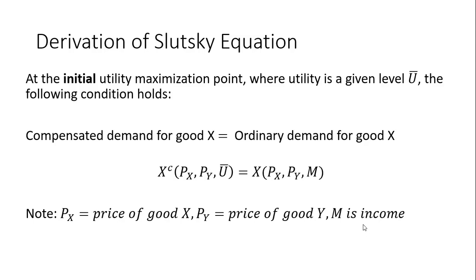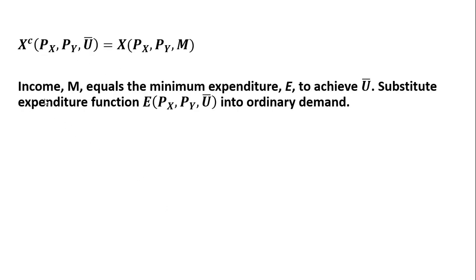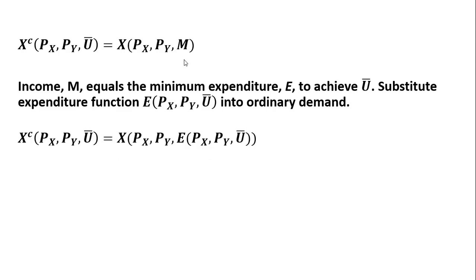Here m is income, price of good x, and price of good y. Rewriting that condition and recognizing that income m equals the minimum expenditure e to achieve a given level of utility U-bar, I'm going to substitute the expenditure function — which is a function of the prices of good x and good y and a given level of utility — into the ordinary demand function where I see m, plugging in the expenditure function. Making that substitution for m, we now have this result.